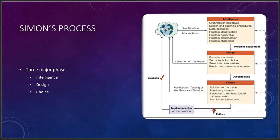Inside the book, Simon's process has three major phases: intelligence, design, and choice. In the intelligence phase, you have organizational objectives, search and scanning procedures, data collection, identification, ownership, classification, and problem statement. This blends data analytics with project management. You need to convert that text-based problem statement into an algorithm, determine whether data exists in a data lake or if you need a new source, and ensure the data is clean.